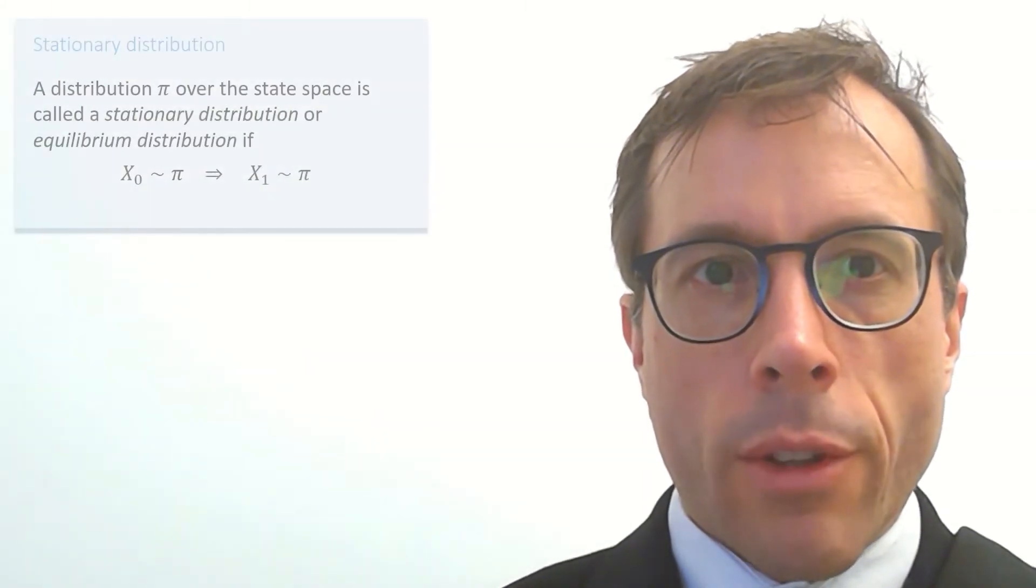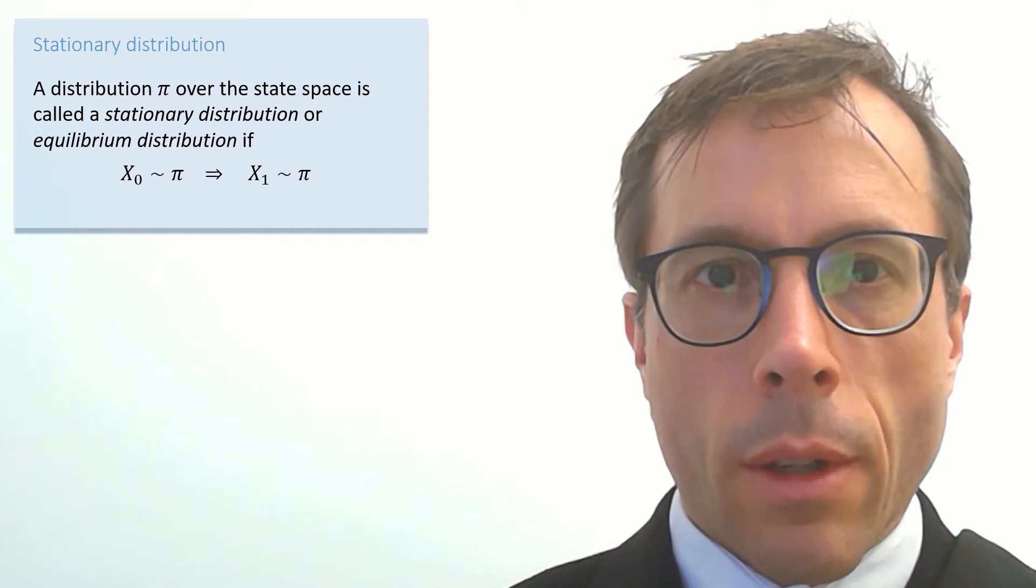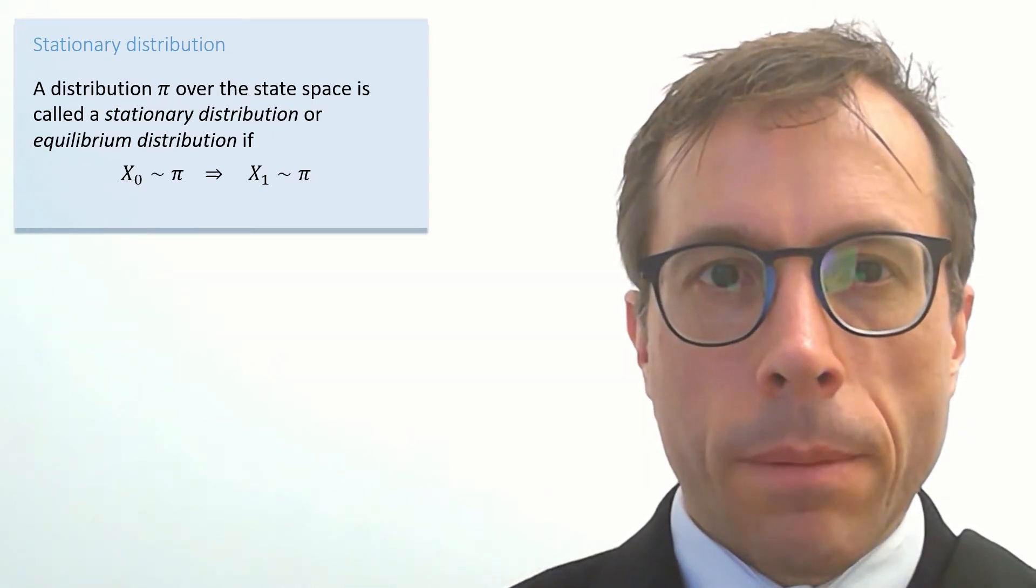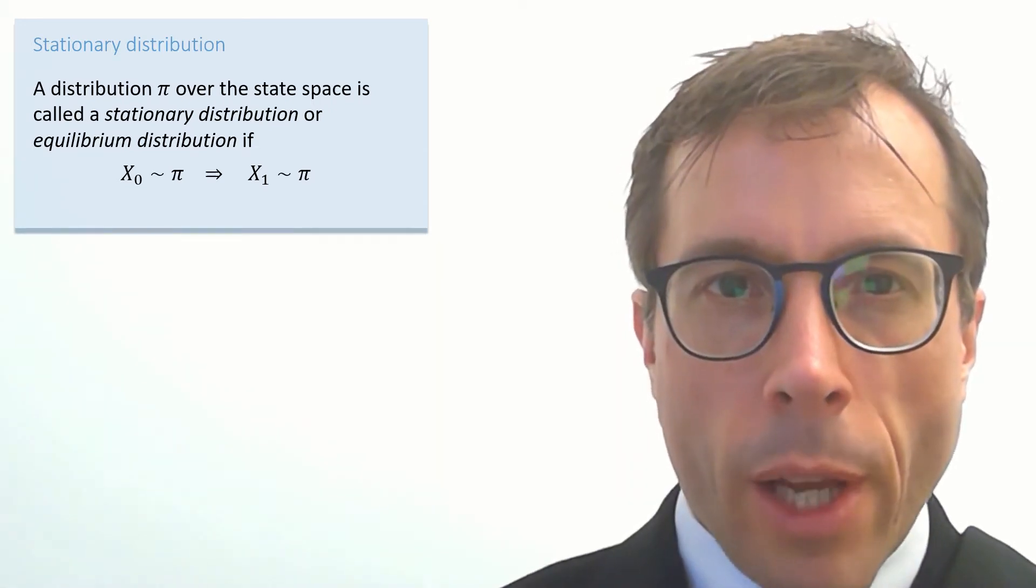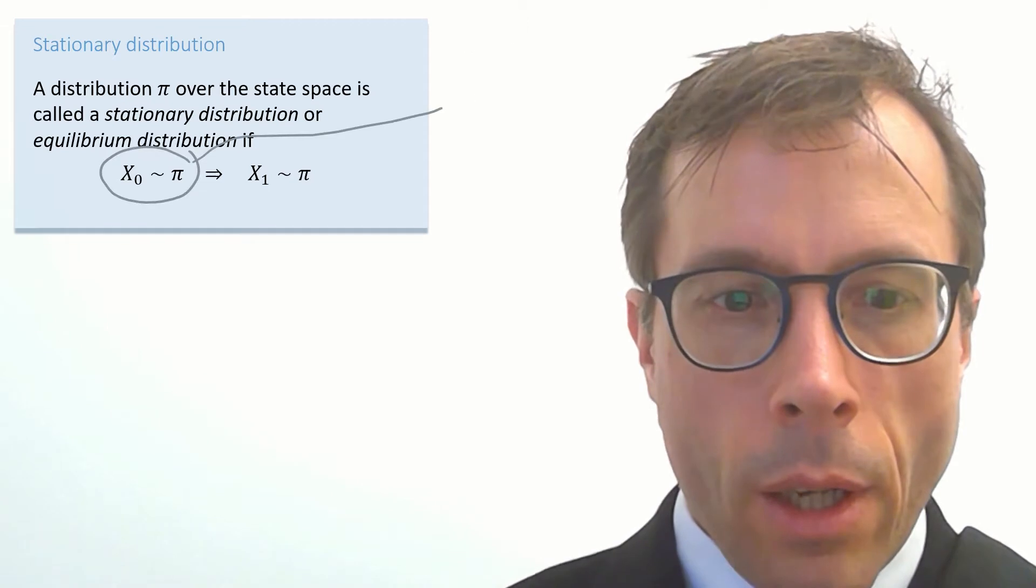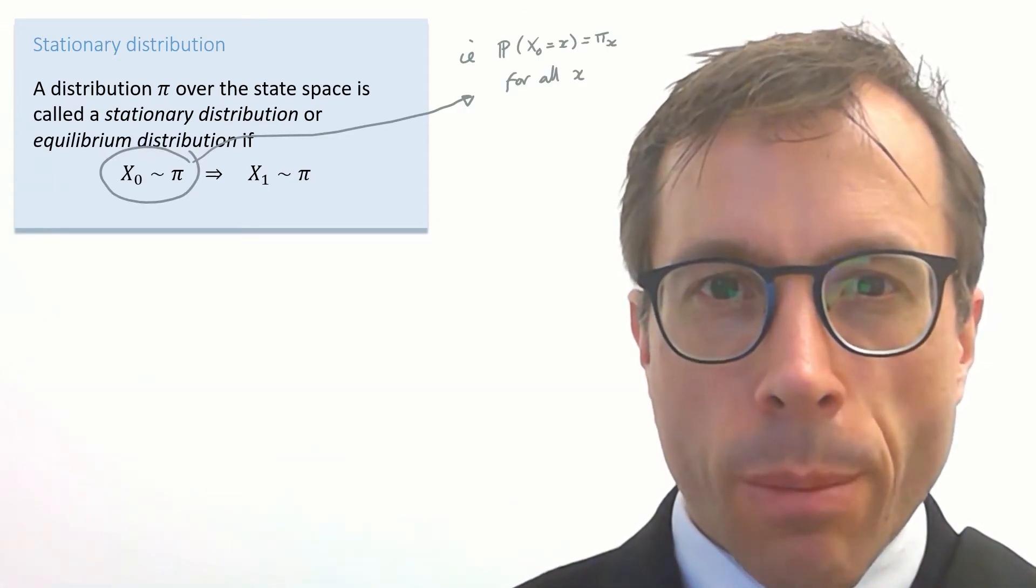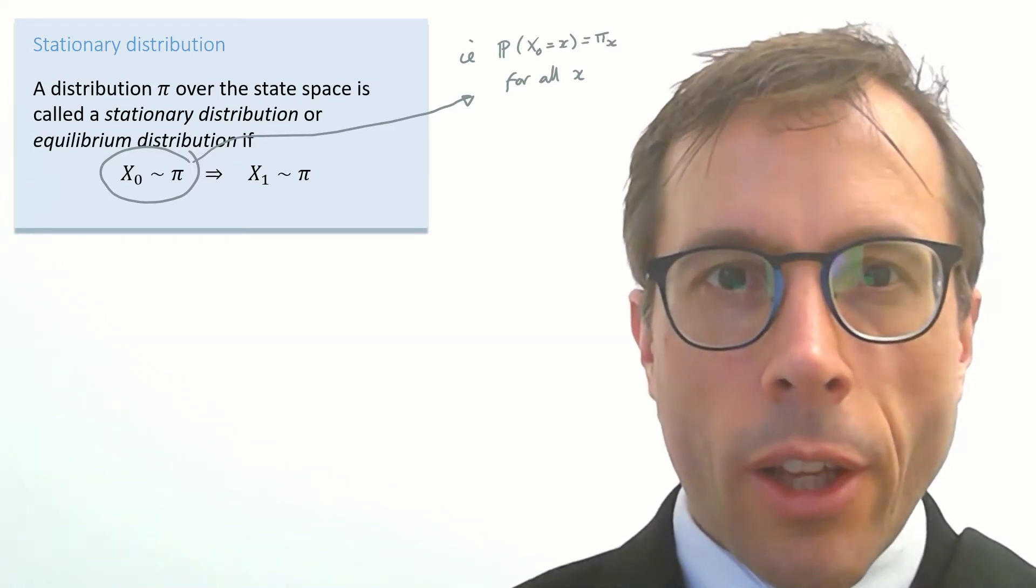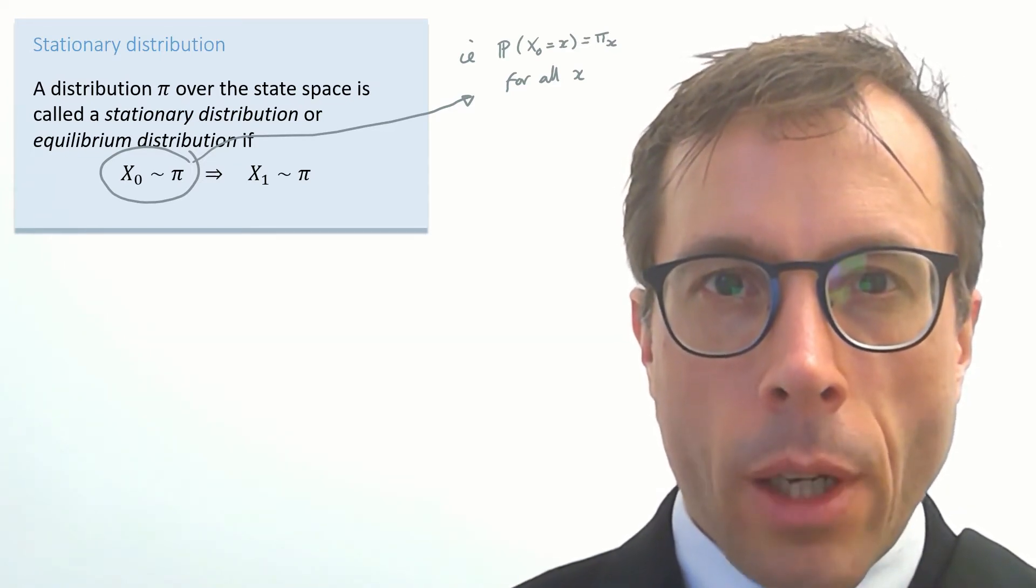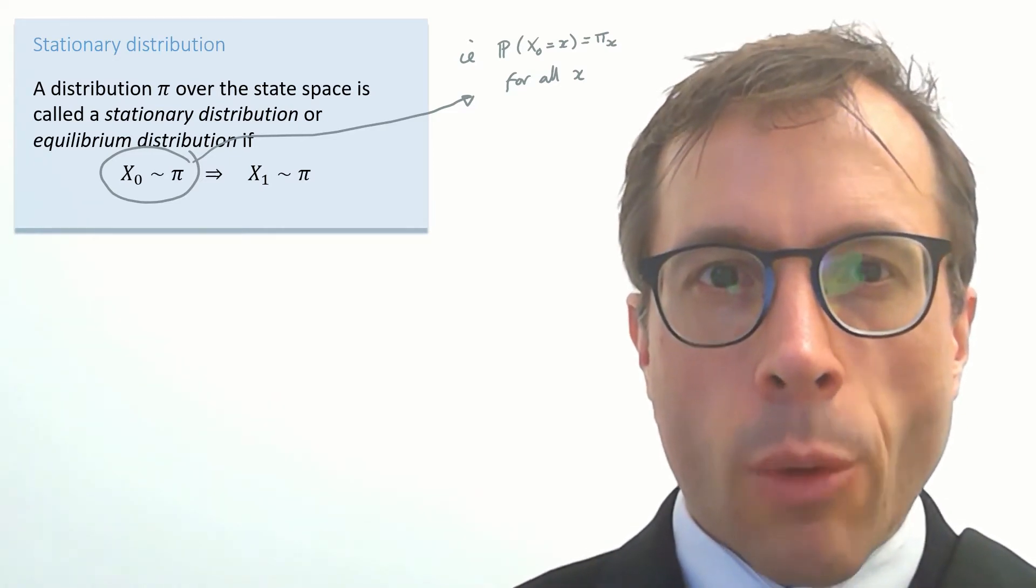Okay, so let's get started. We'll start with the definition: stationary distribution. I'll give you a moment to read. Let me expand some of the notation here. The condition X₀ ~ π, i.e., X₀ has distribution π, that just means that the probability that X₀ takes value little x is equal to π_x. In other words, this condition says suppose the initial state is chosen randomly and that we pick state x with probability π_x.